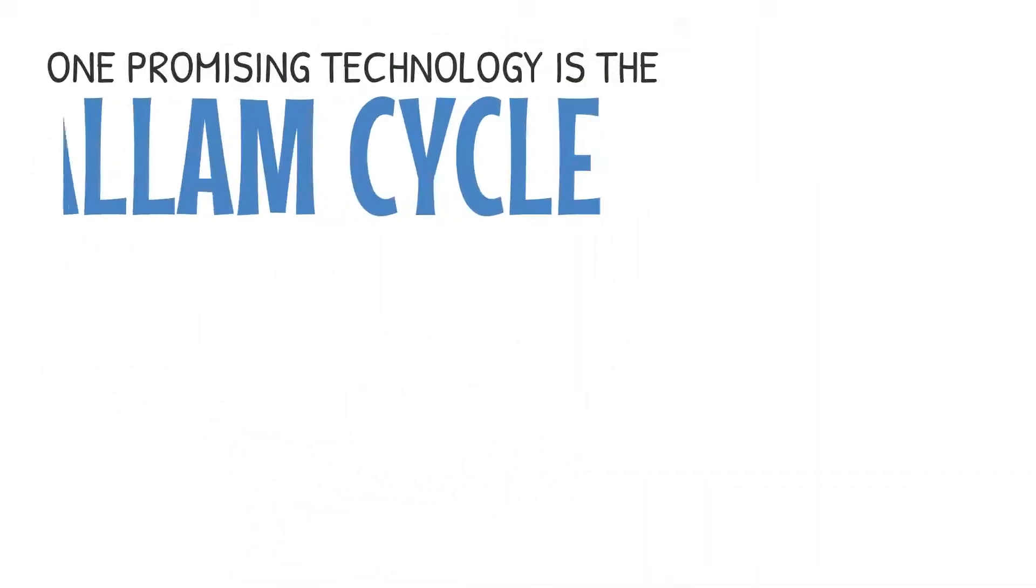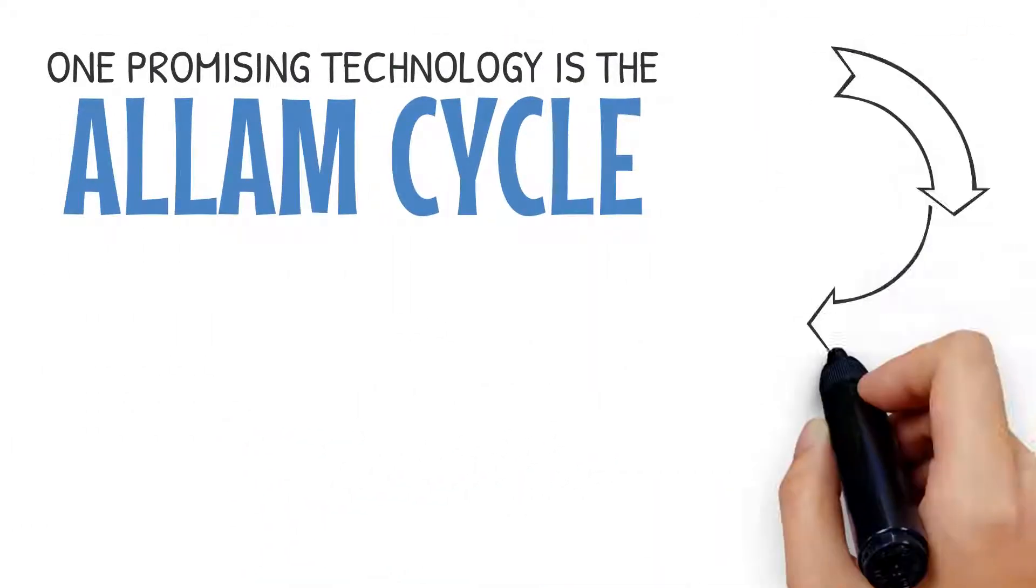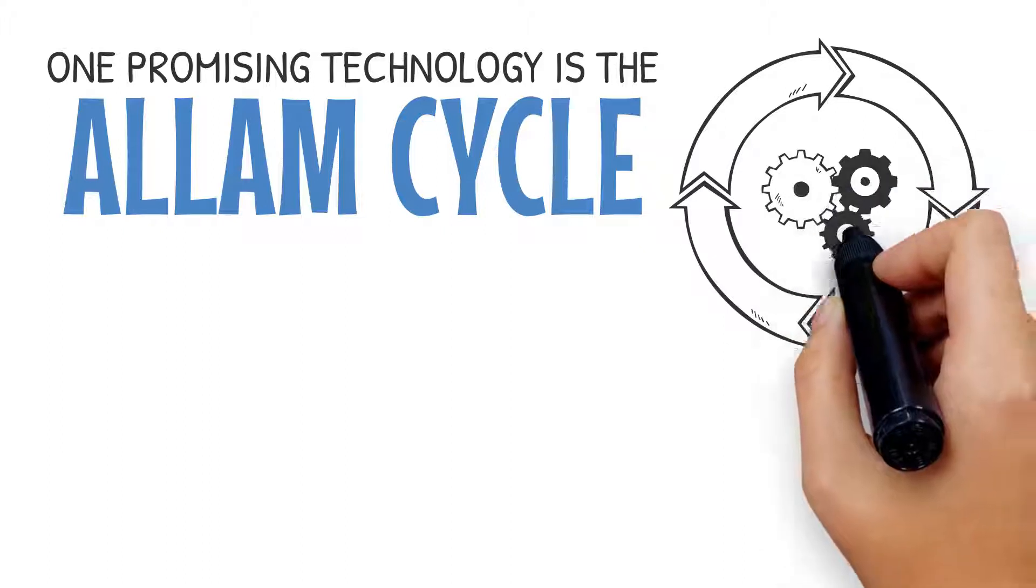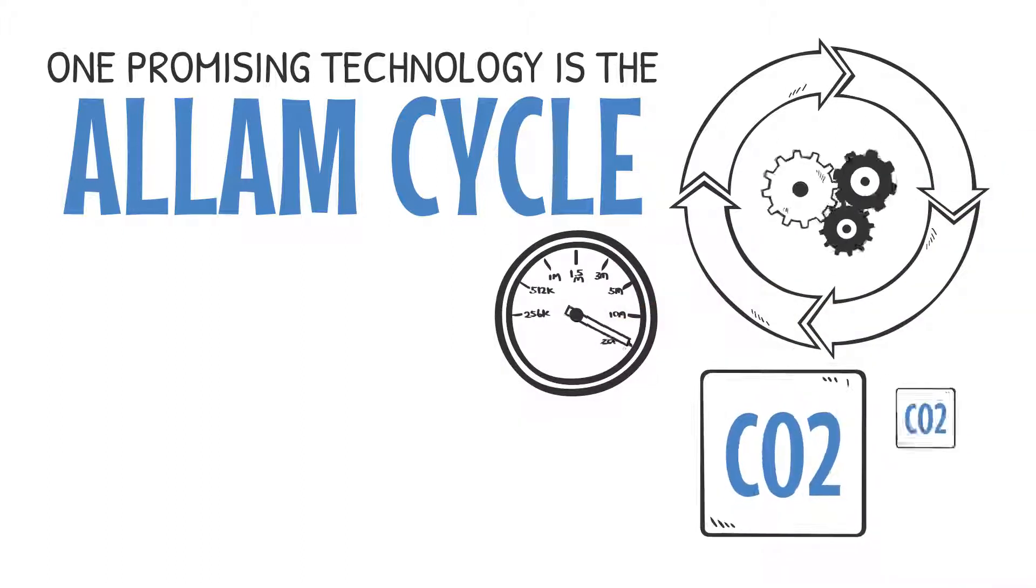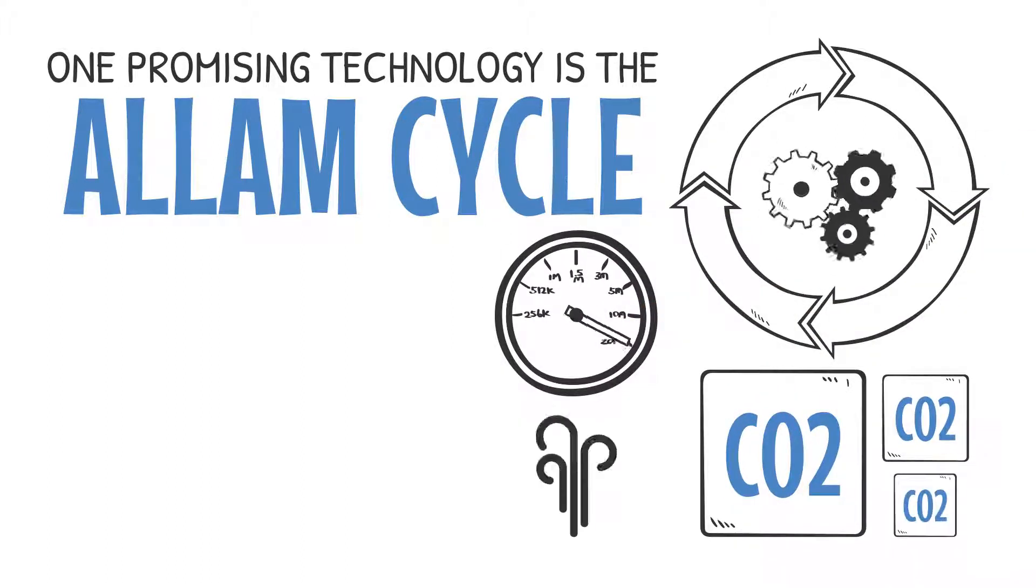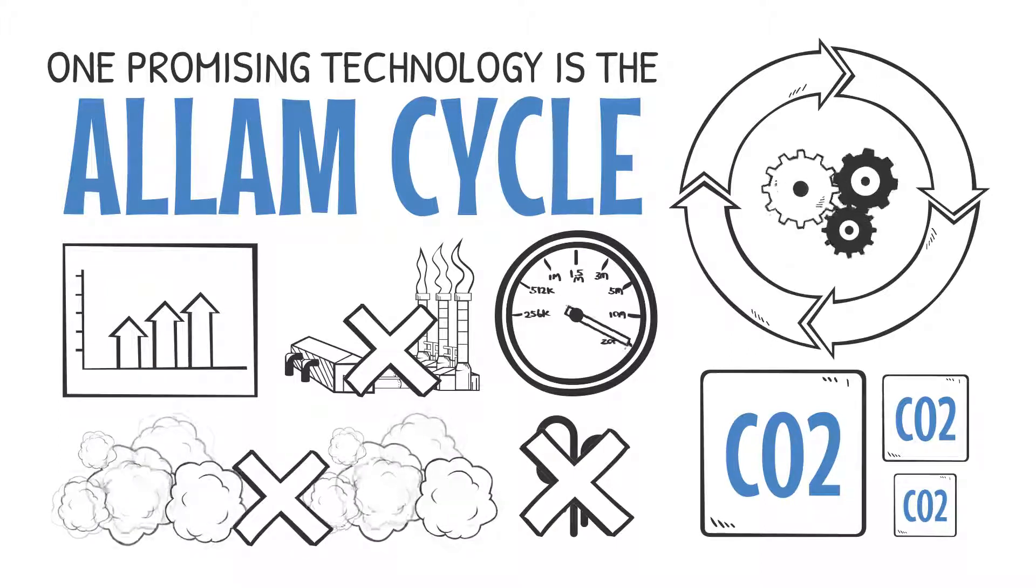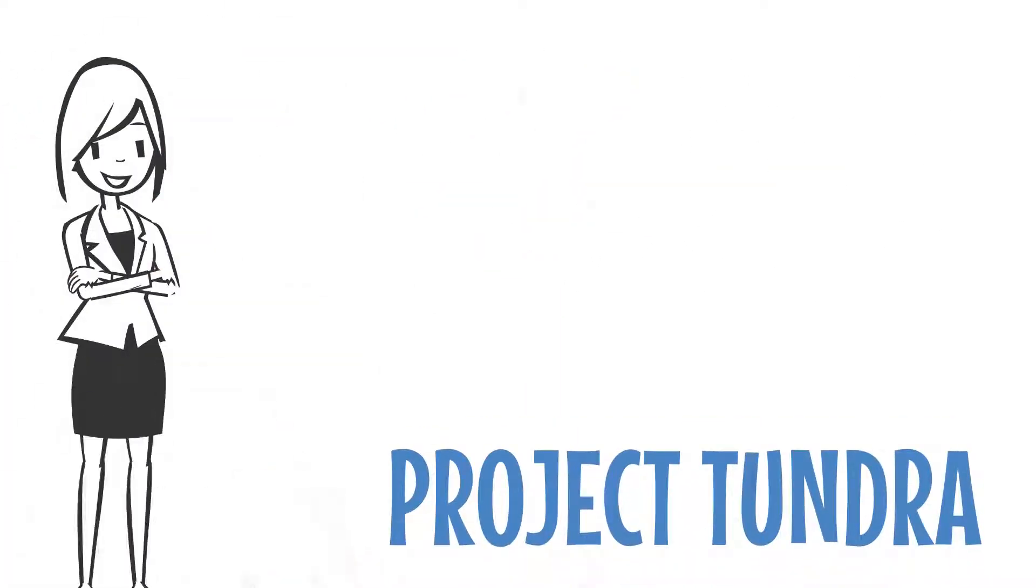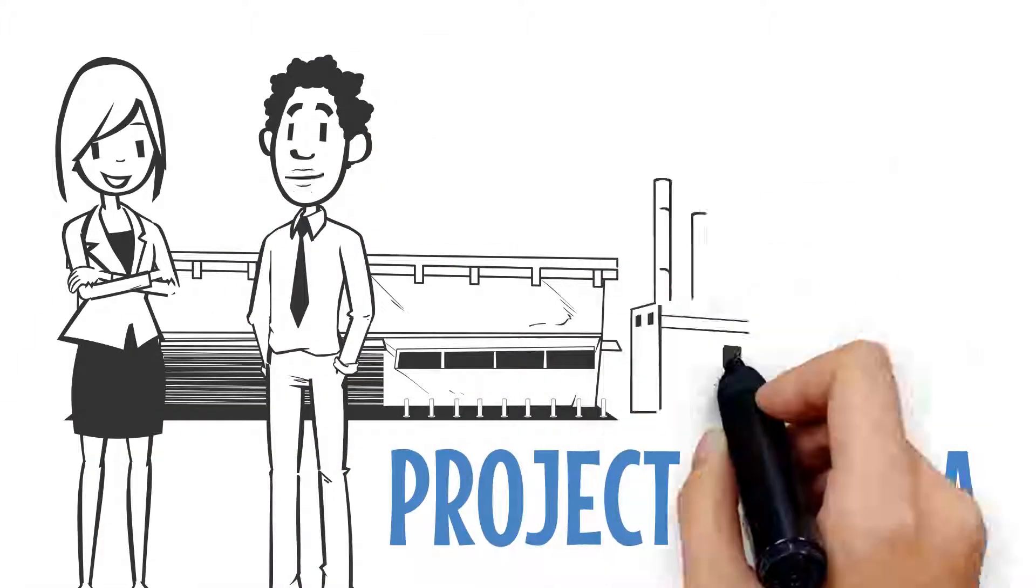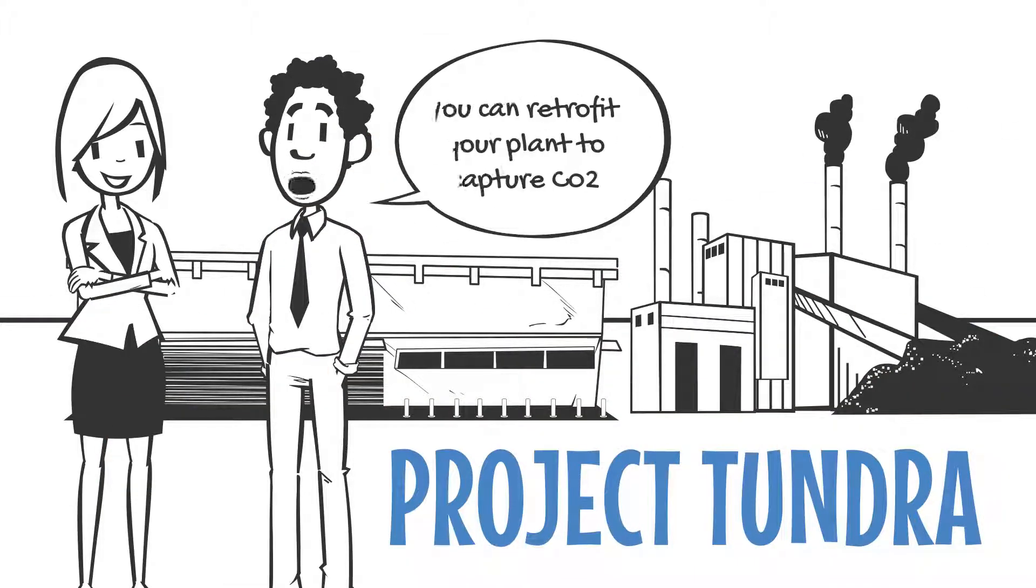One promising technology is the Allam Cycle. The Allam Cycle rethinks the entire electricity generation system by using highly pressurized CO2 instead of steam to generate power, resulting in a plant with higher efficiency, no smokestacks, and near zero emissions. Another is known as Project Tundra, which allows utilities to retrofit existing power plants to capture CO2.